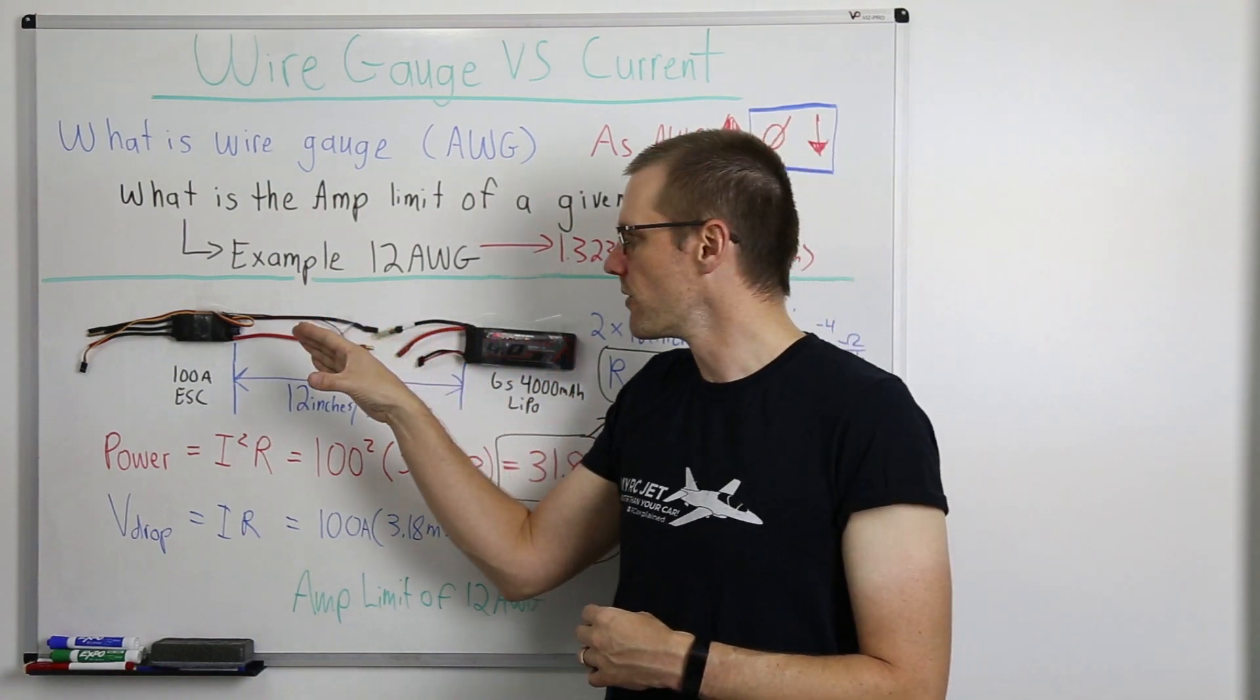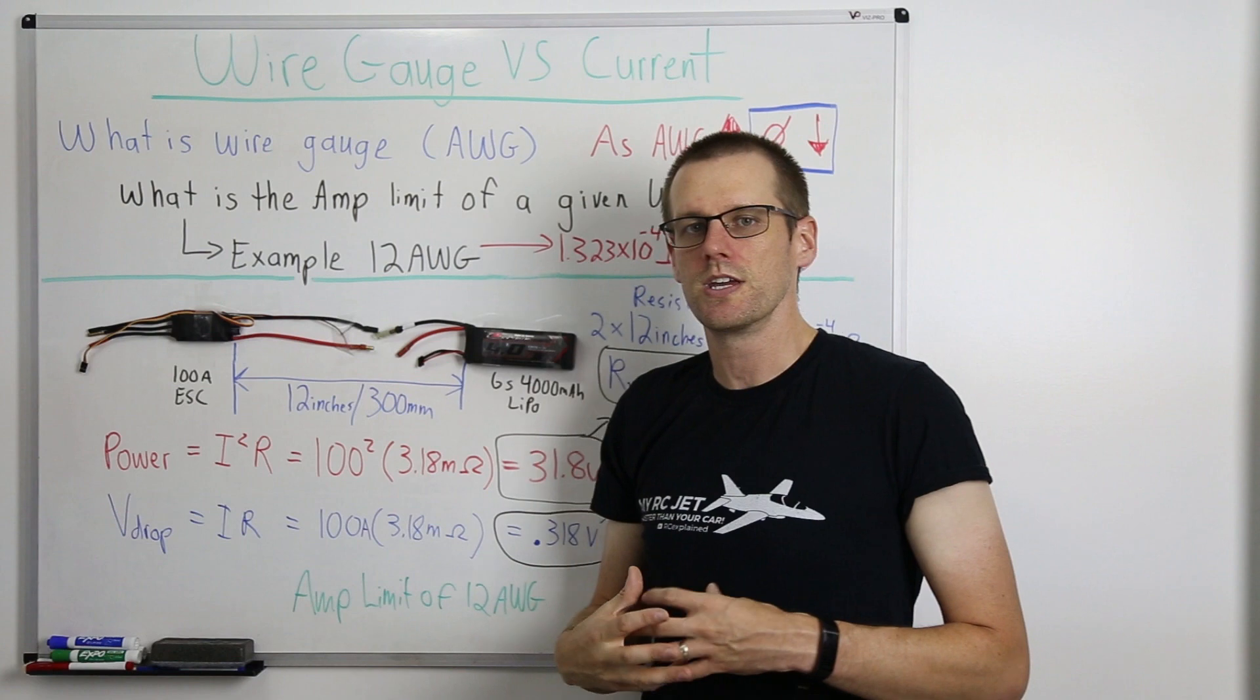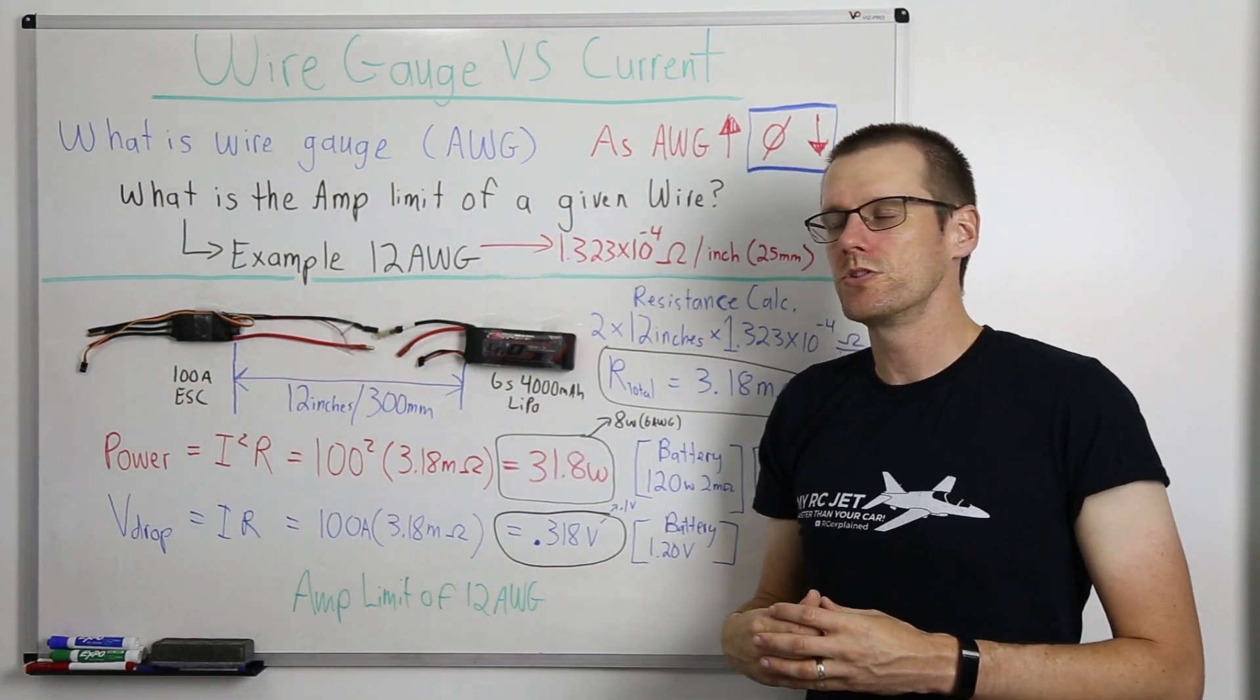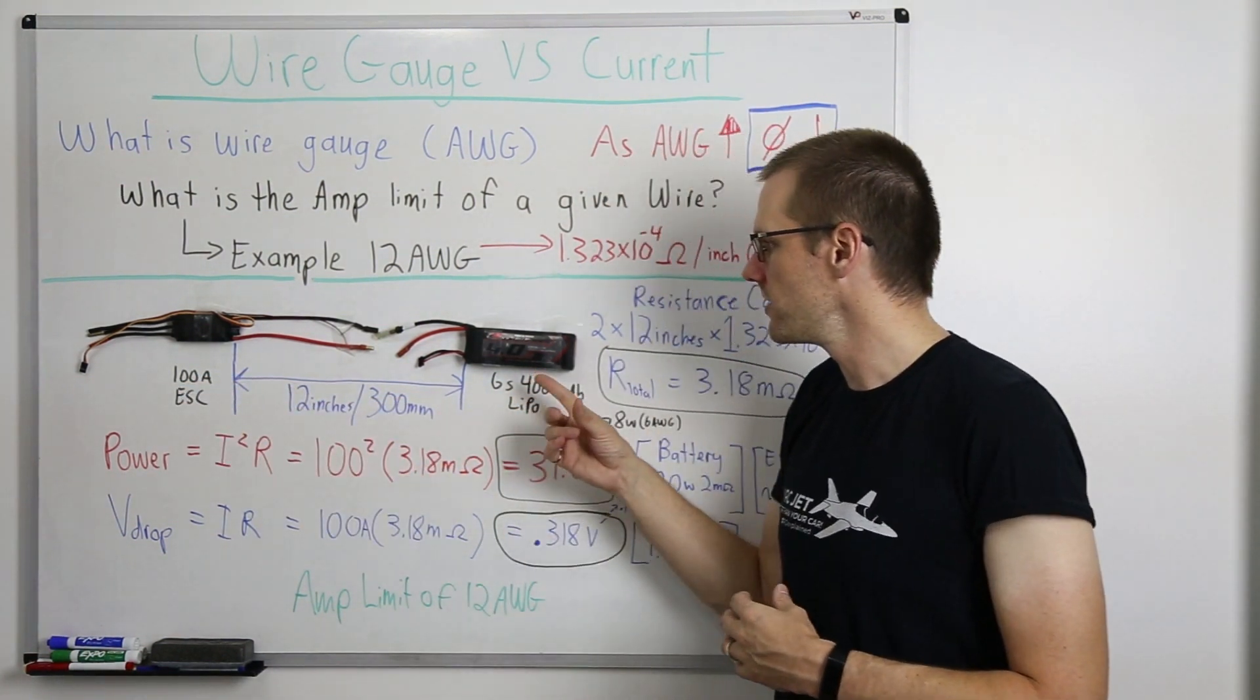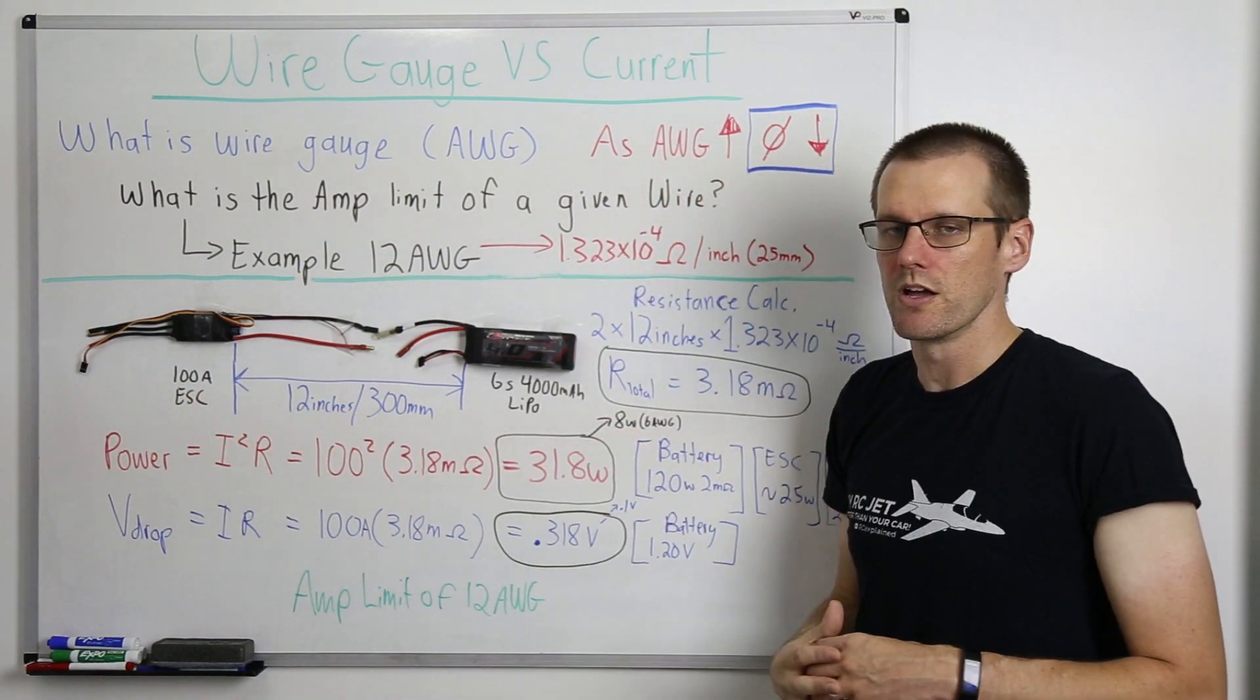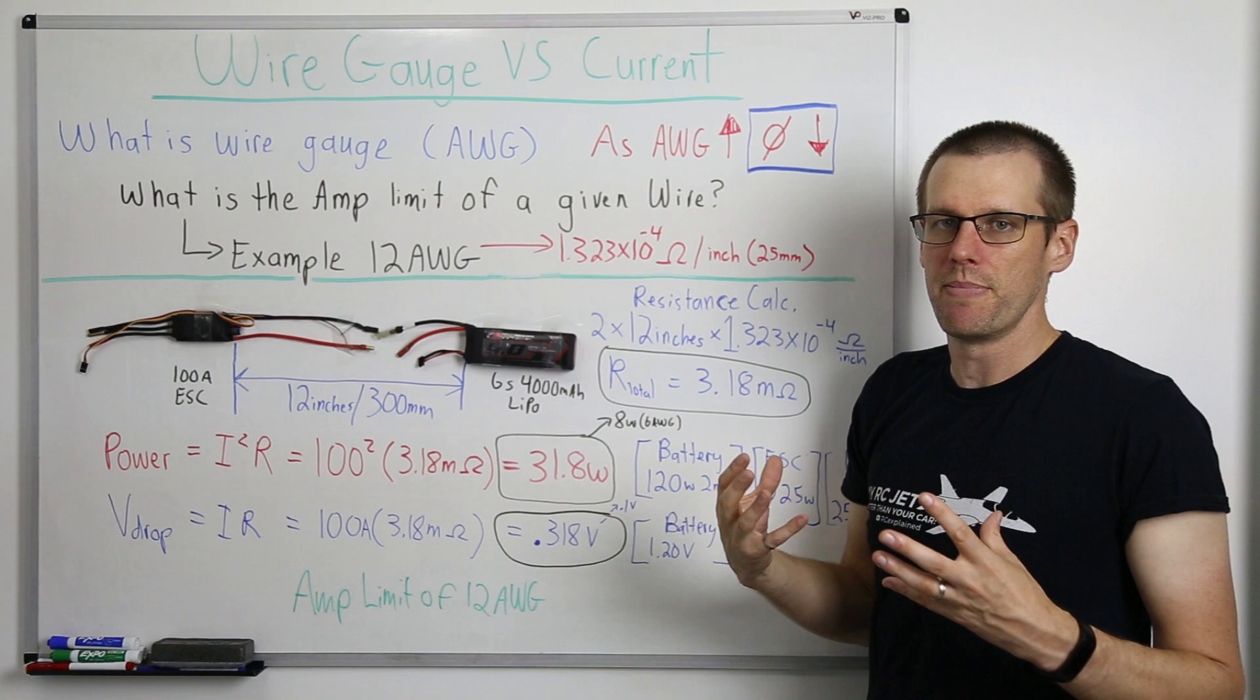For now, what we want to do is focus in on this practical example where we actually have this system playing out in an electric ducted fan jet. This is the speed control that's used in that electric ducted fan jet, and this is a similar battery that's being used in that jet. This speed control is a 100 amp speed control, and we're going to say for argument's sake that our power system is going to be pulling 100 amps. This here on the right hand side is a 6S 4000 milliamp hour battery pack. It's a LiPo, obviously, and these two things are separated at a distance of 12 inches, which tells us that we have a run of 12 inches of wire coming from this side and 12 inches of wire returning back to that battery pack.